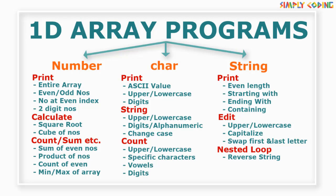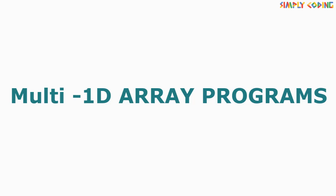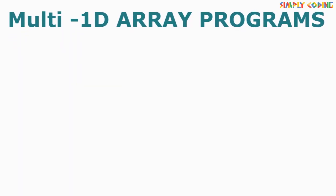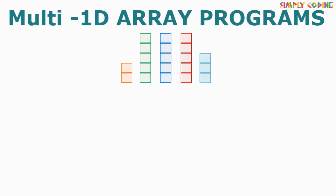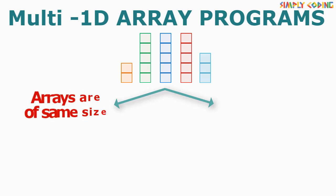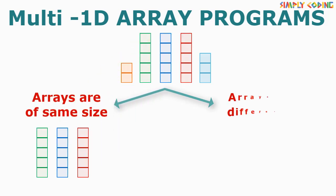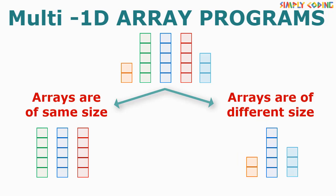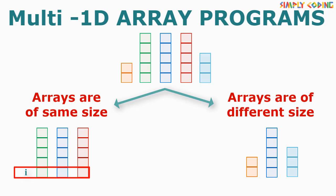Let's get started with multiple array programs. These programs basically have two or more 1D arrays which you need to manage. There are two types: one where all arrays are of the same size, and the second where arrays are of different size. When arrays are of the same size, you can use one index i to work on all rows across the arrays. When arrays are differently sized, you may need to declare more than one index and also take care to increment it.